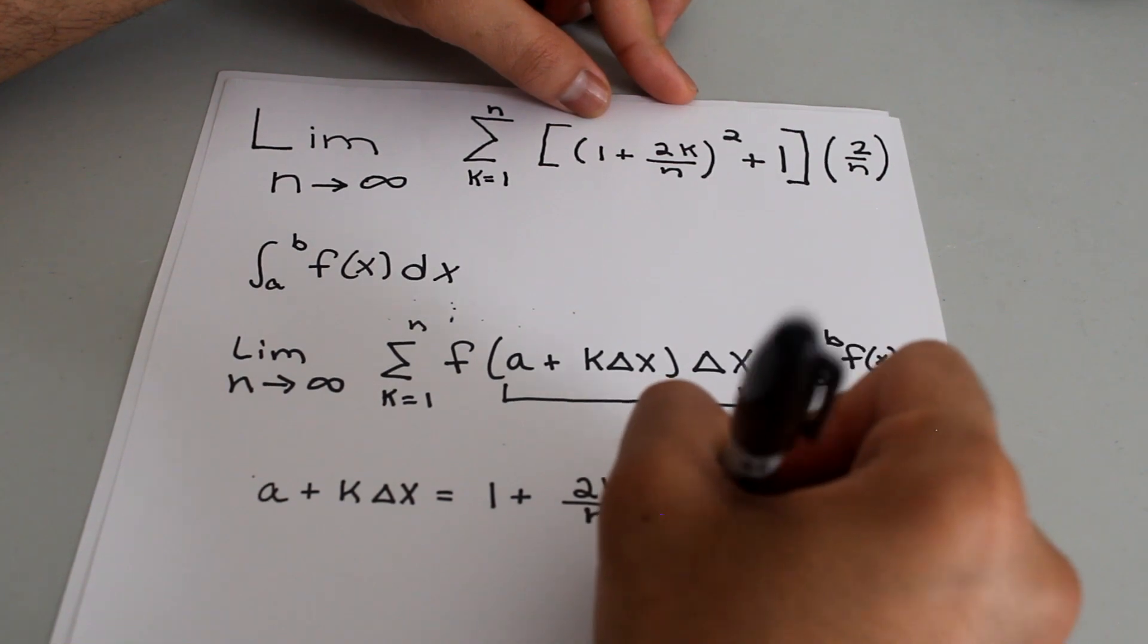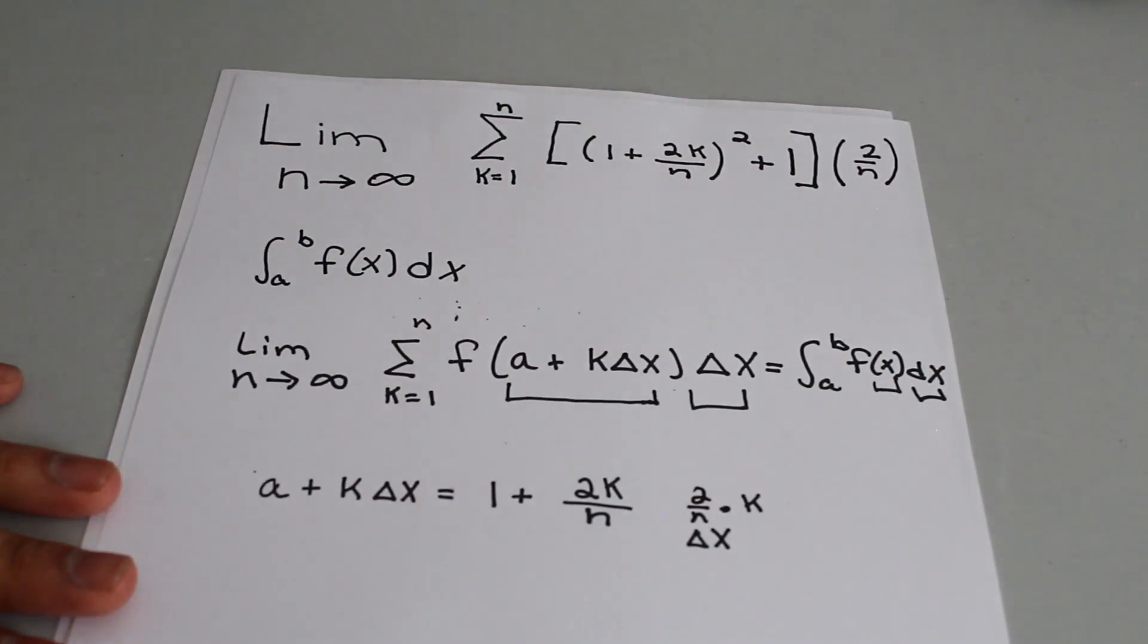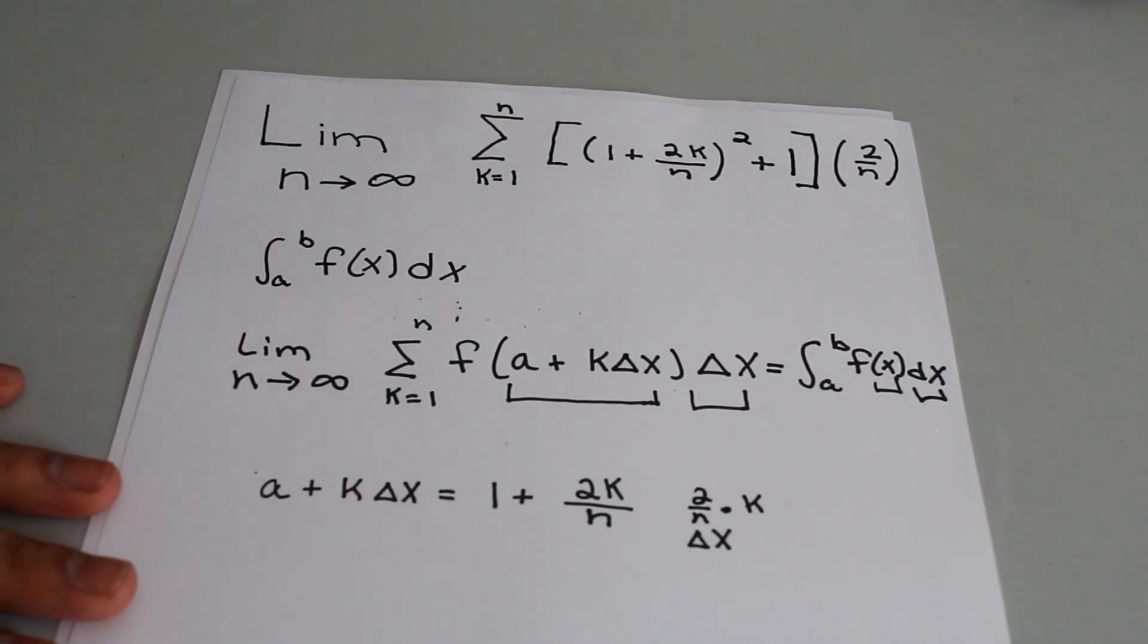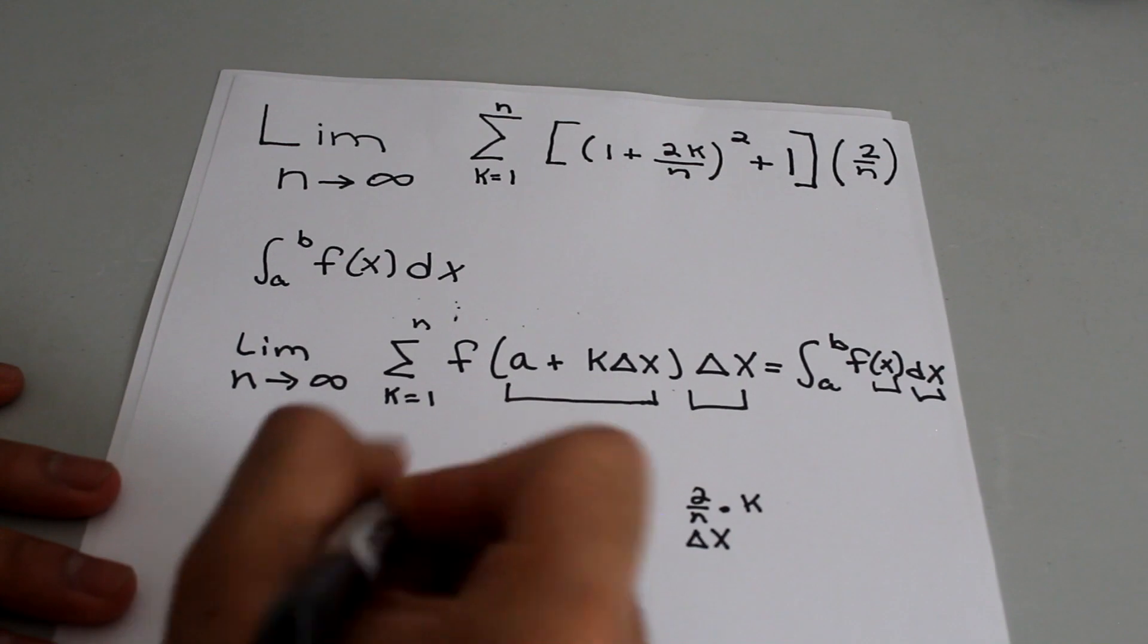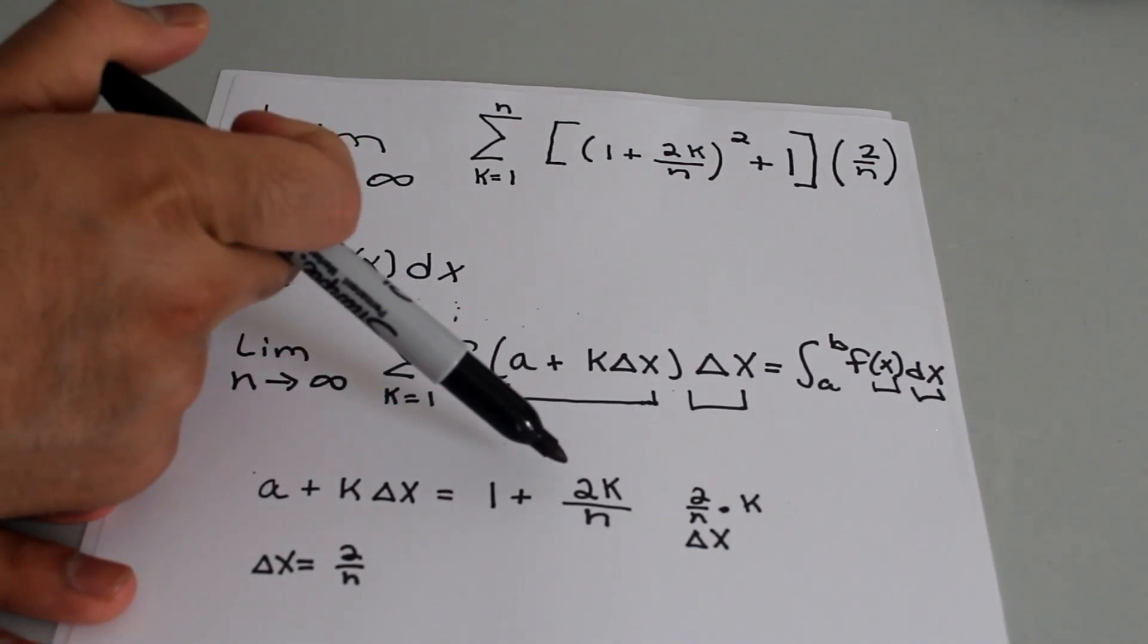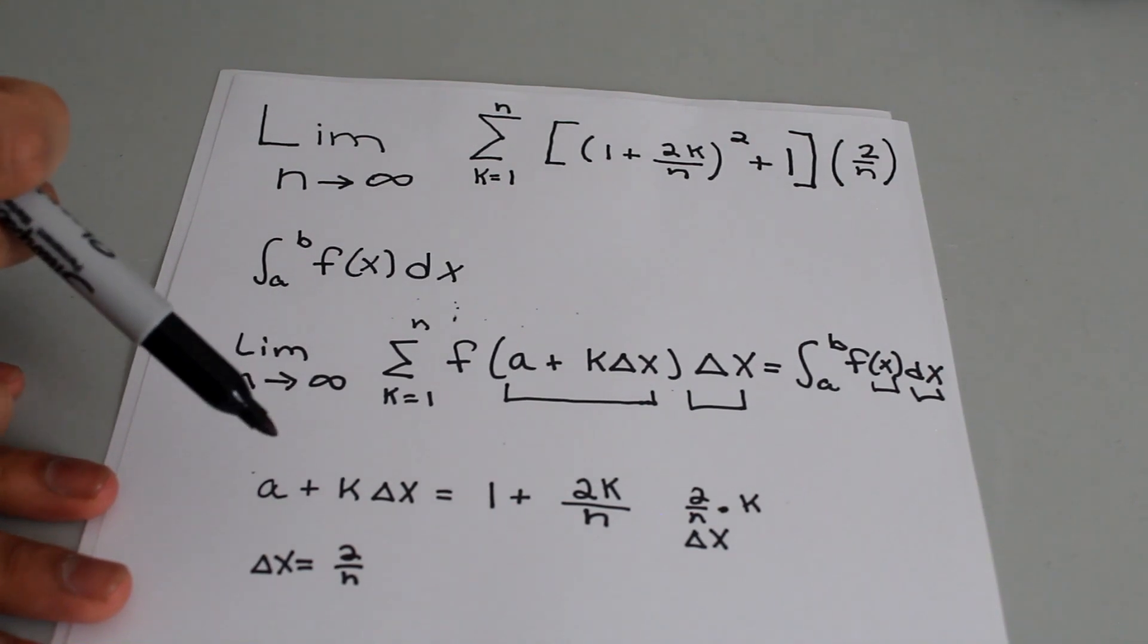So if this was delta x, delta x is being multiplied by k over here. So we can say that delta x is equal to 2 over n. So that means we have a plus k delta x and then delta x is equal to 2 over n.